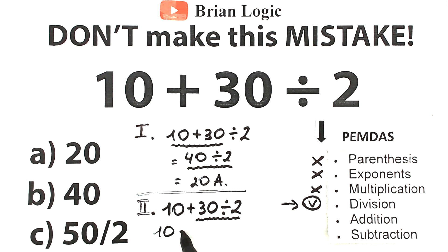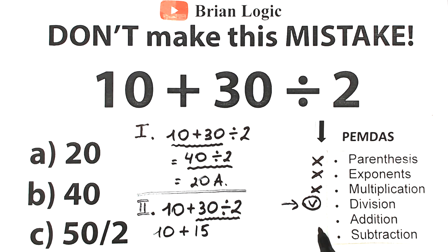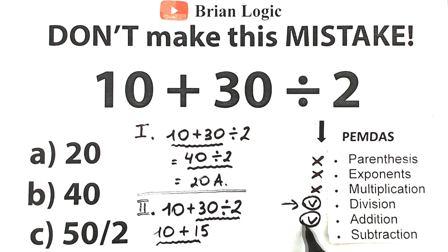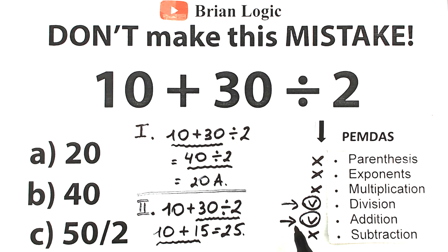So we have 10 plus 30 divided by 2. First, 30 divided by 2 equals 15. We complete this division part, and now we have the addition. So we have 10 plus 15, which equals 25. As you can see, division is always before addition. You should divide first, then add. This is the correct order of operations — don't forget about it, because this is a very serious mistake in terms of math.